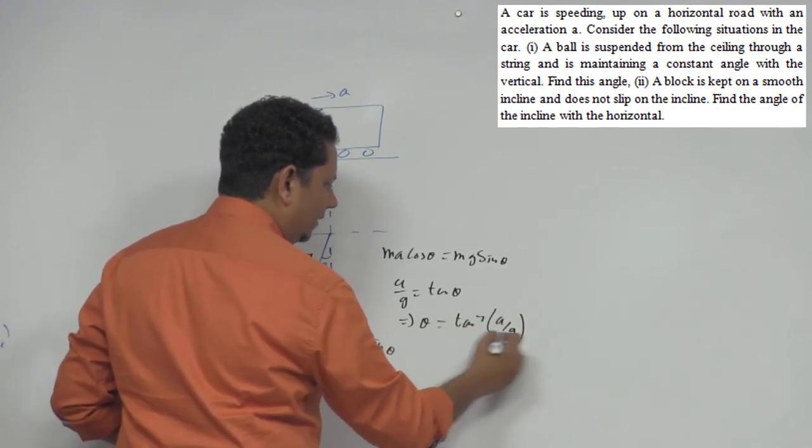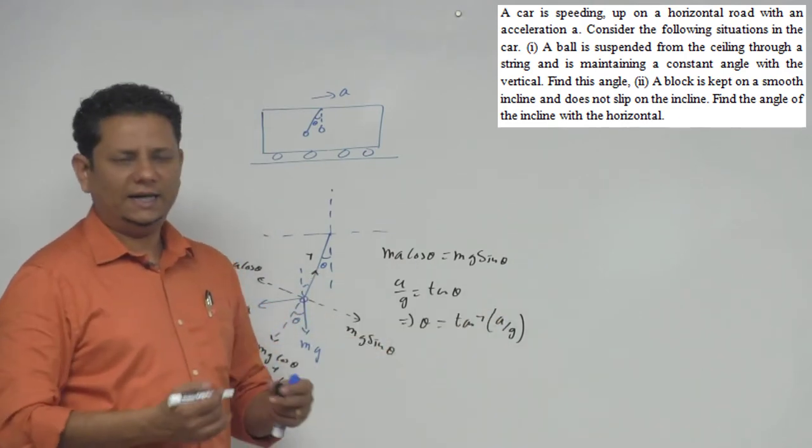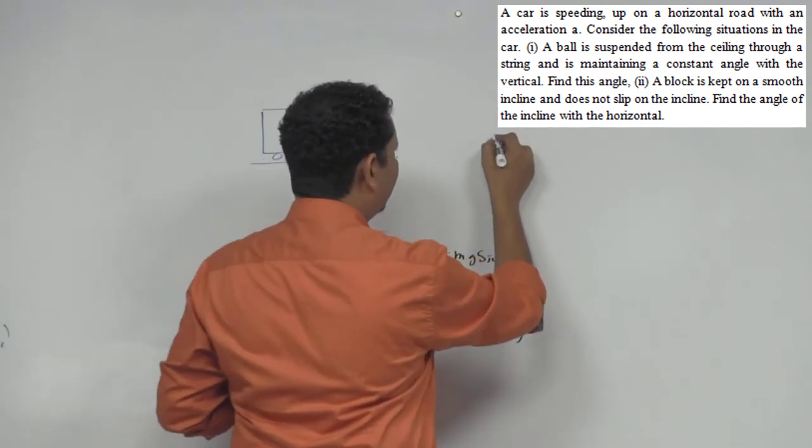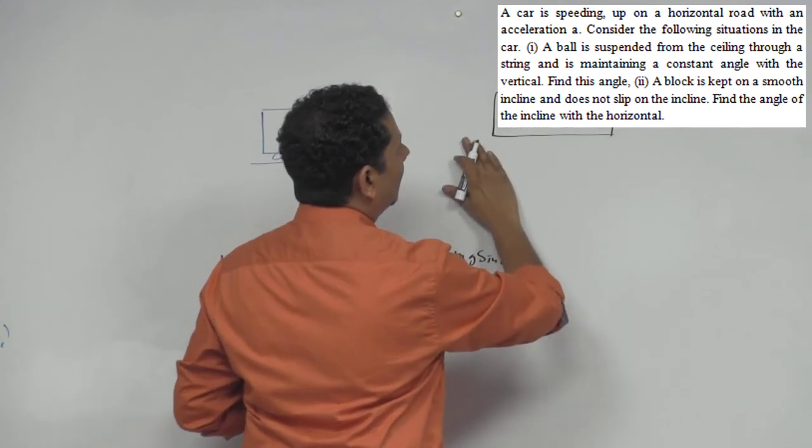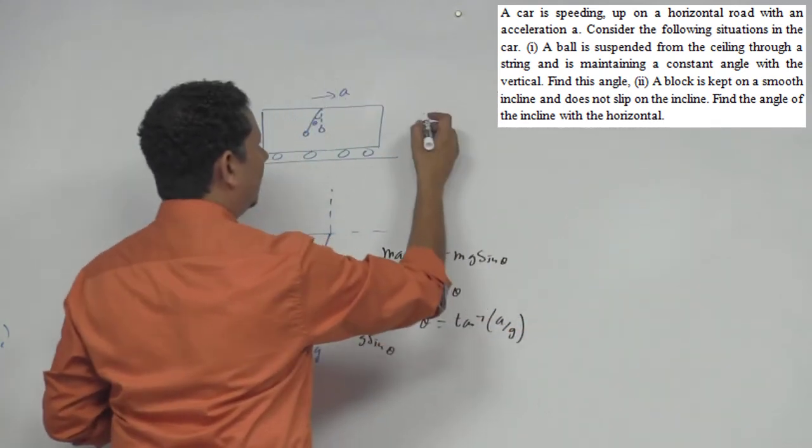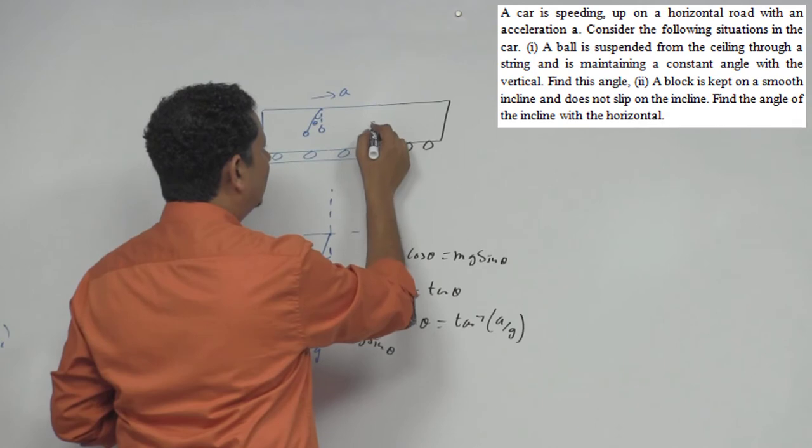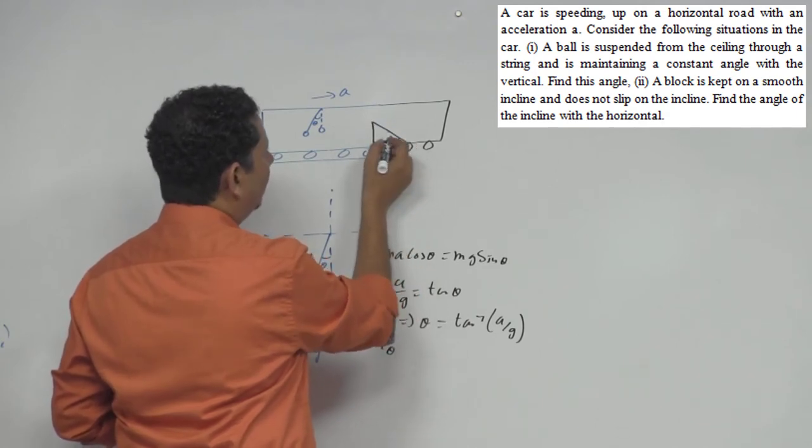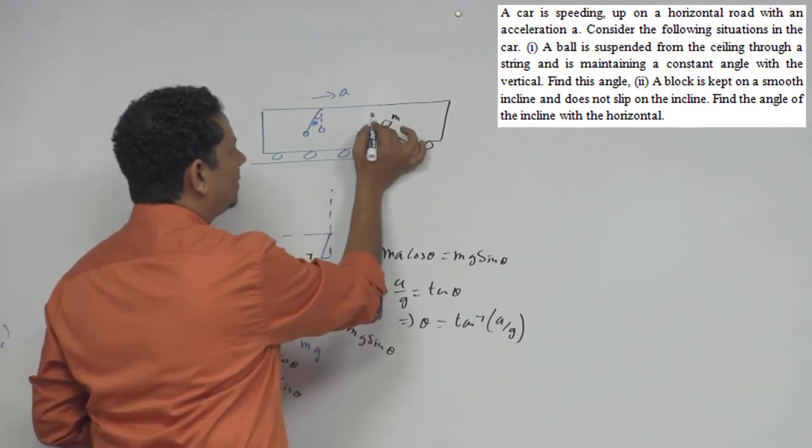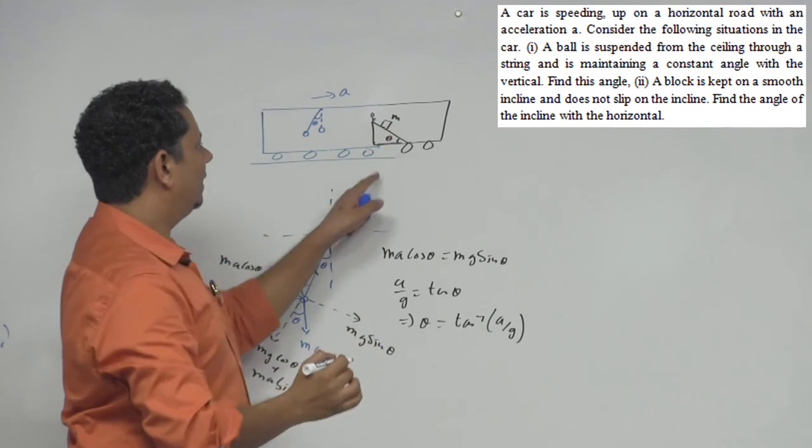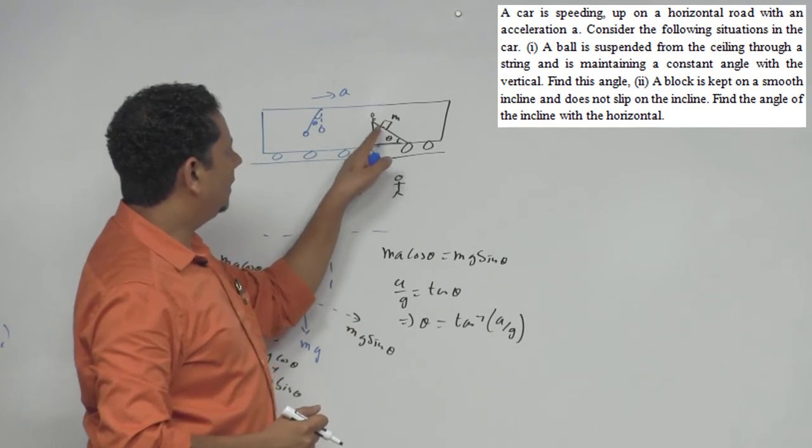This angle is the constant angle maintained for this particular acceleration. Now second scenario: this container is accelerating with acceleration A. You have an incline, and here you can see a block. If you see ground frame, then of course it's accelerating, but if you see from here, this block is at rest on this incline.